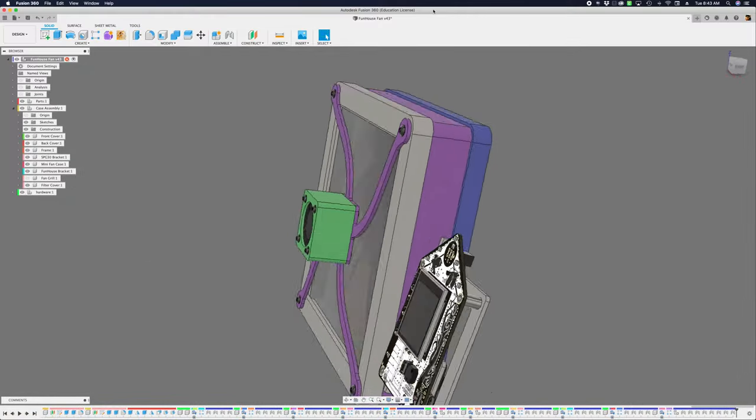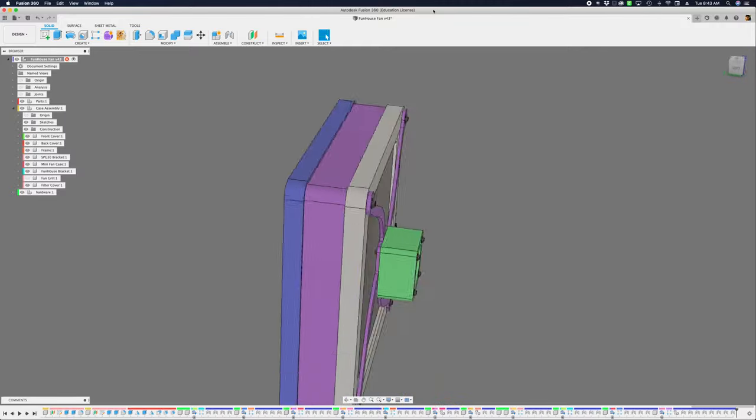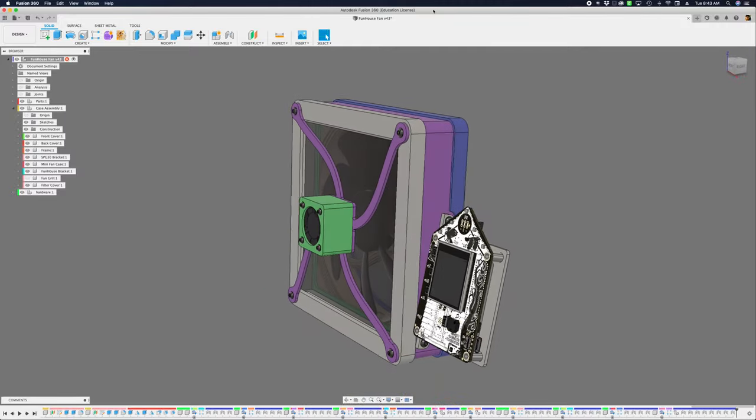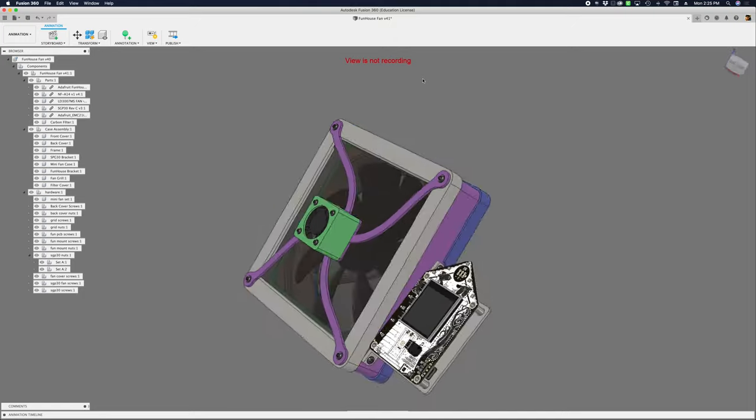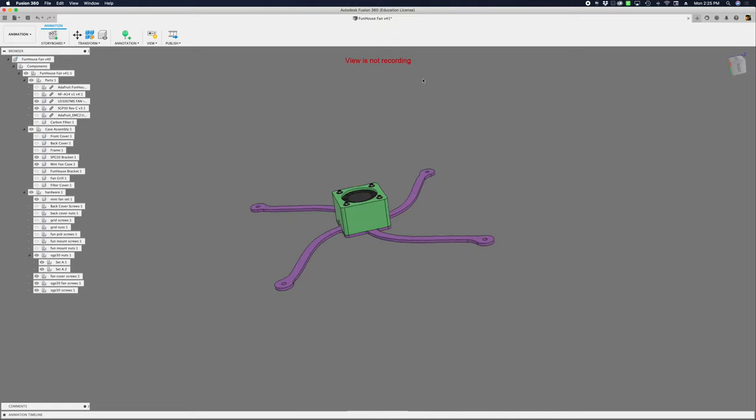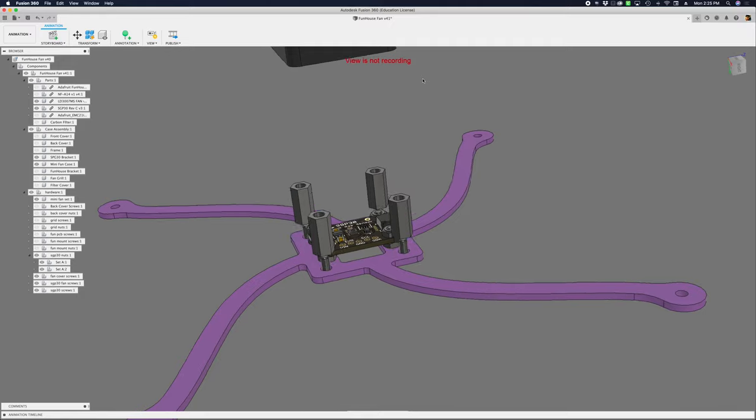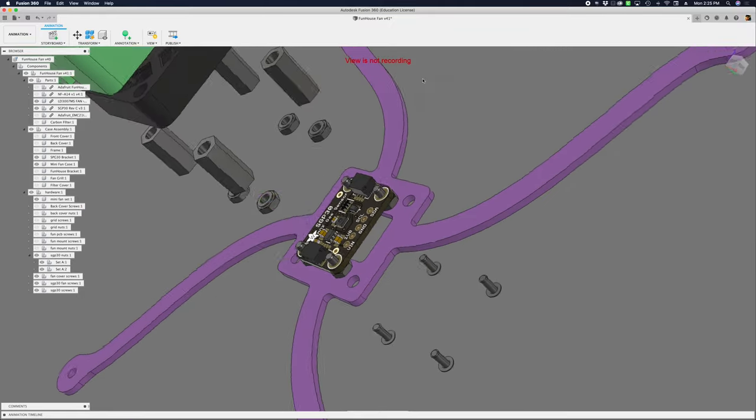Our enclosure design in Fusion 360 features 3D models of the electronics with parts from GrabCAD and McMaster Carr. The challenge in this project led to designing a cover for the minifan to make better airflow. An opening just behind the sensor allows the fumes to exit through the back of the mount.